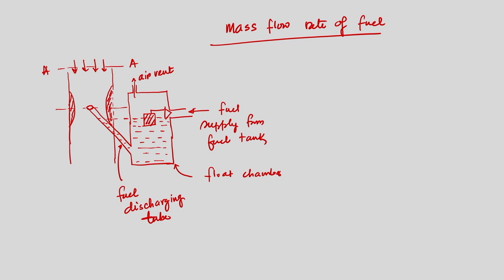We discussed the mass flow rate of air; today we will discuss the mass flow rate of fuel. Initially the level of fuel in the discharge tube and float chamber will be the same. When pressure falls at section BB below atmospheric pressure — and we have atmospheric pressure at section CC — that pressure difference is the driving force for transport of fuel from the float chamber through the discharging tube into the orifice. We applied the ideal gas relationship and steady flow energy equation, and we will see whether those assumptions are valid.